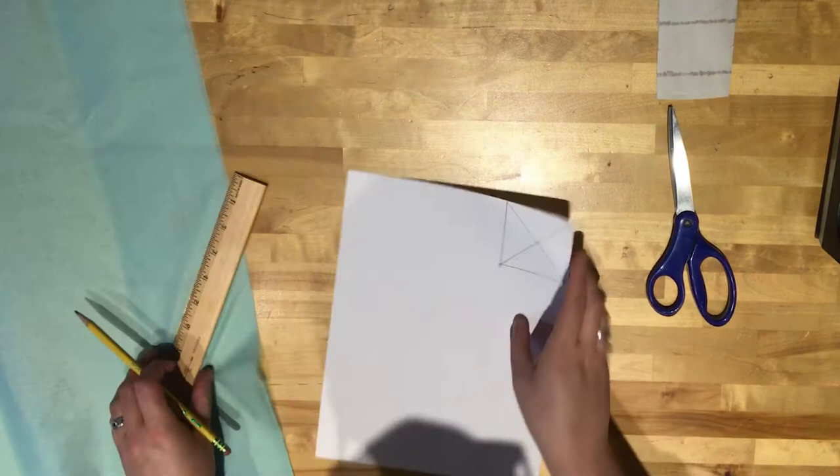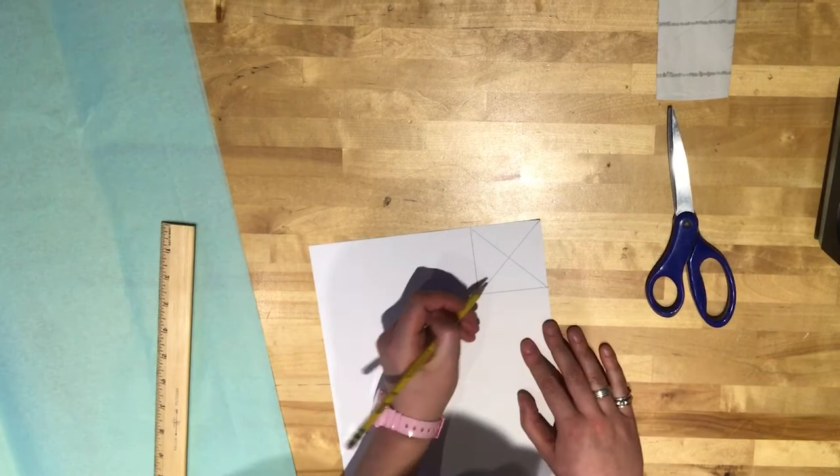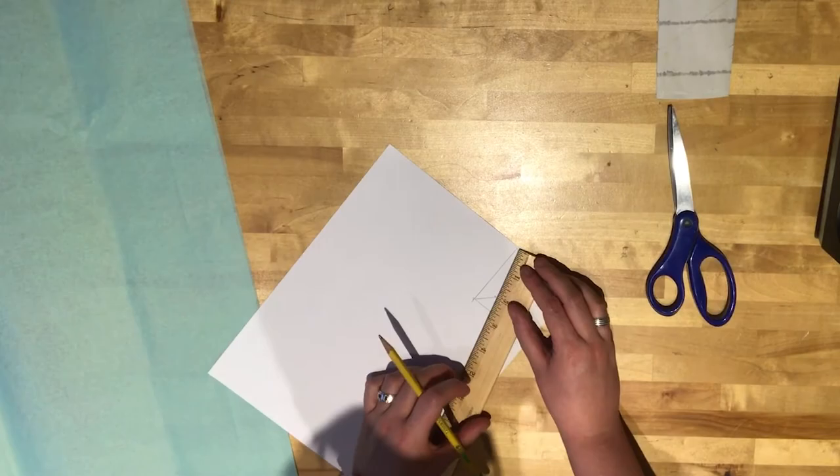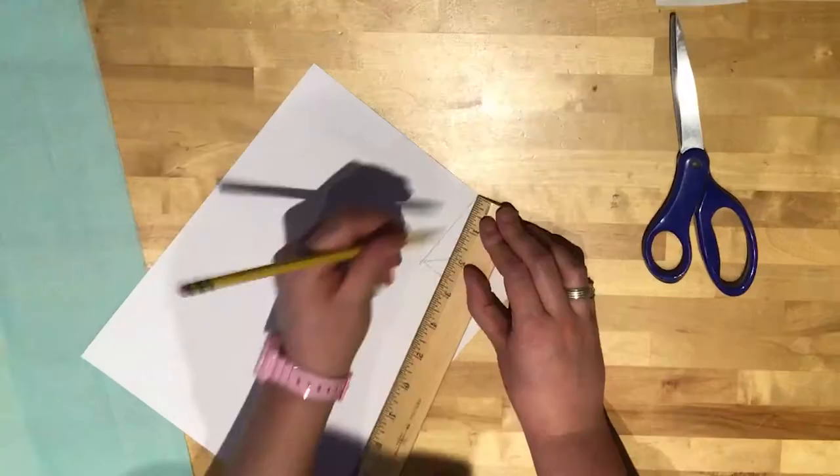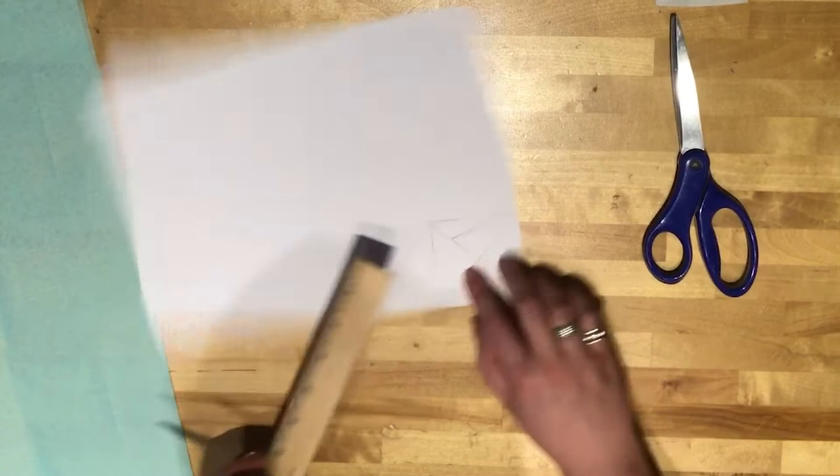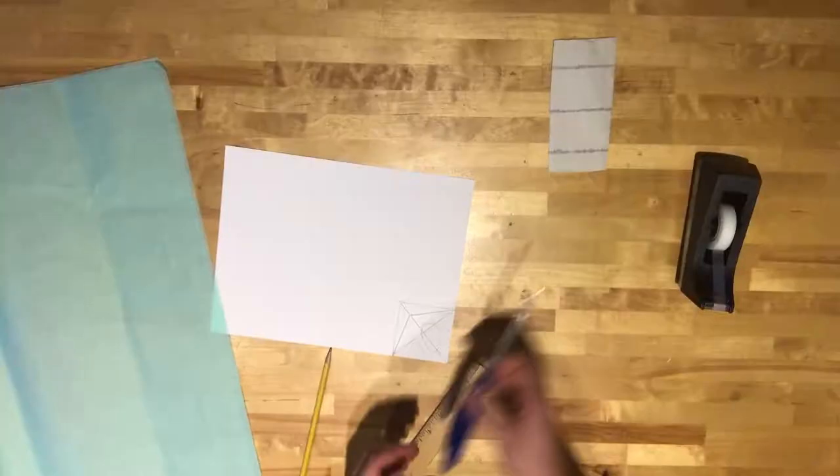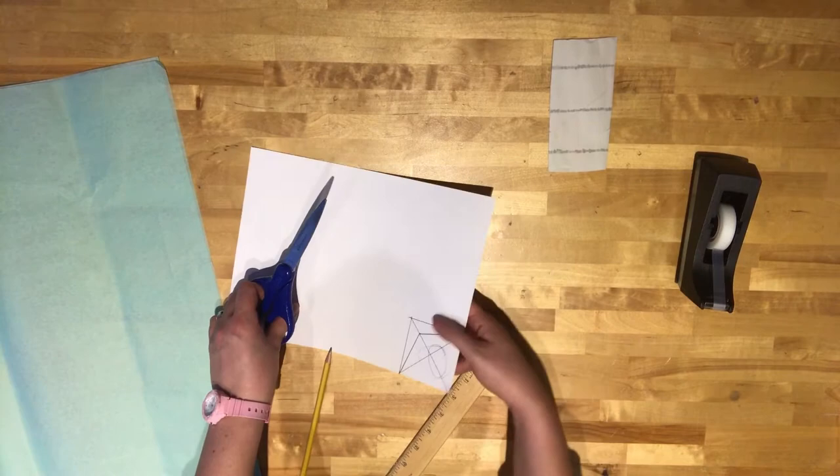I'm going to measure an inch from the center on one side and mark an inch from the center right there. Now this new mark is going to become the corner of my kite, the top corner. I'm going to draw a line from the center mark to the corner on one side, and from the center mark to the corner on the other side. This is the shape that I'm going to cut out and trace onto my tissue paper. This shape here.